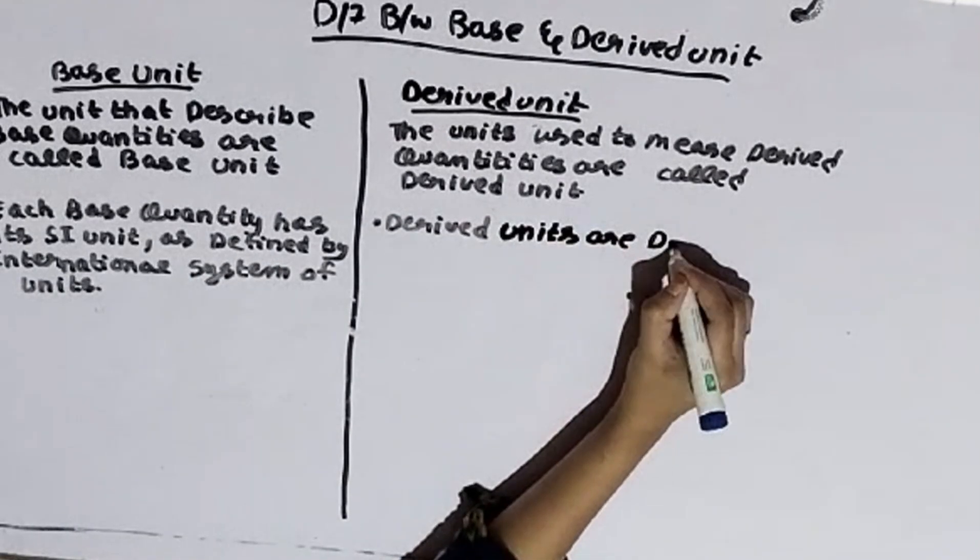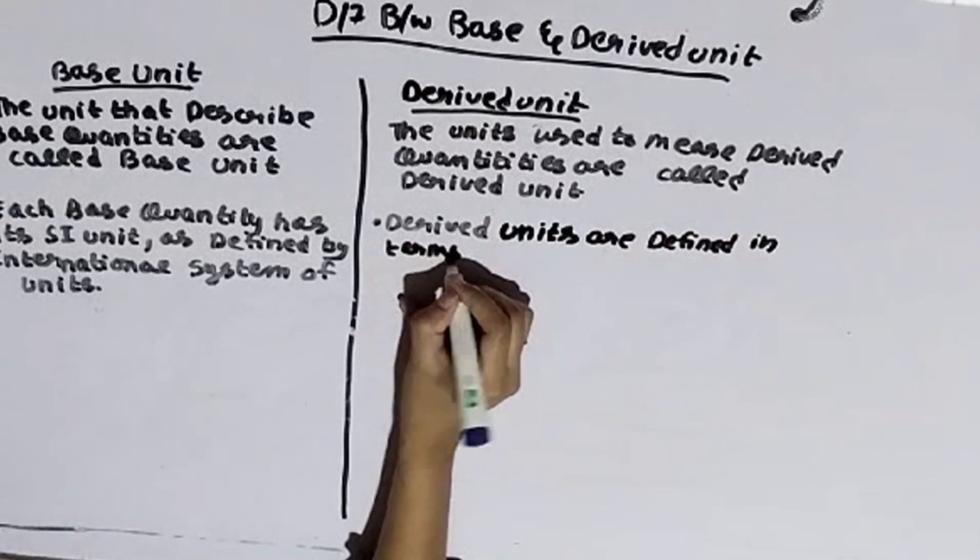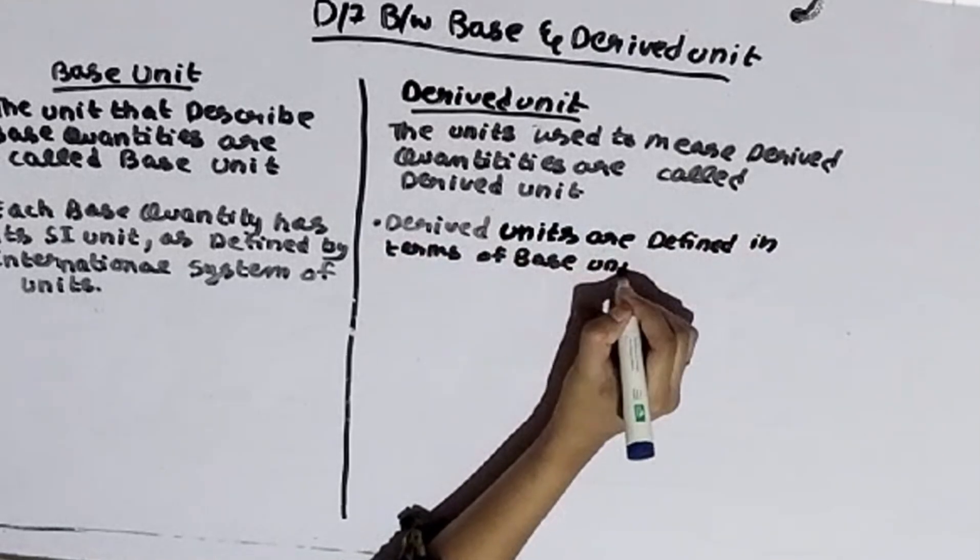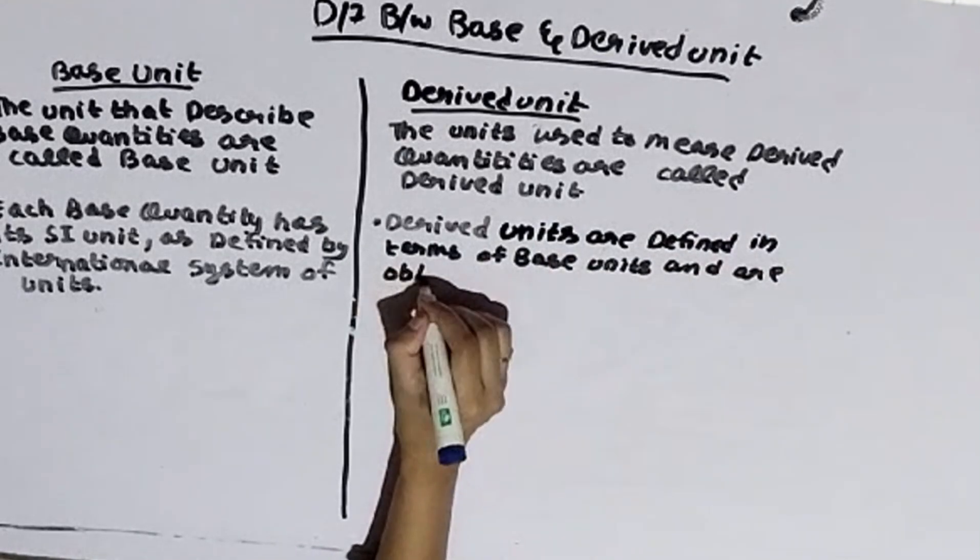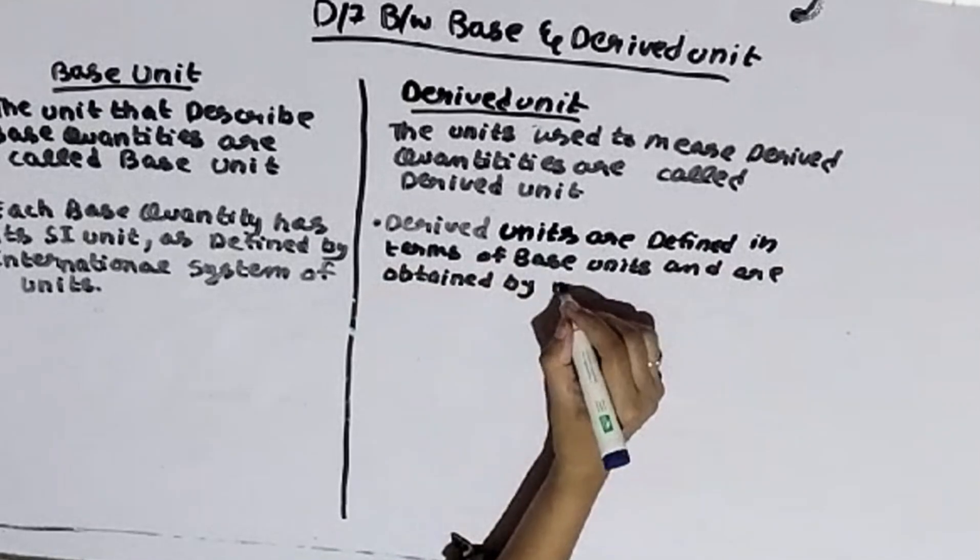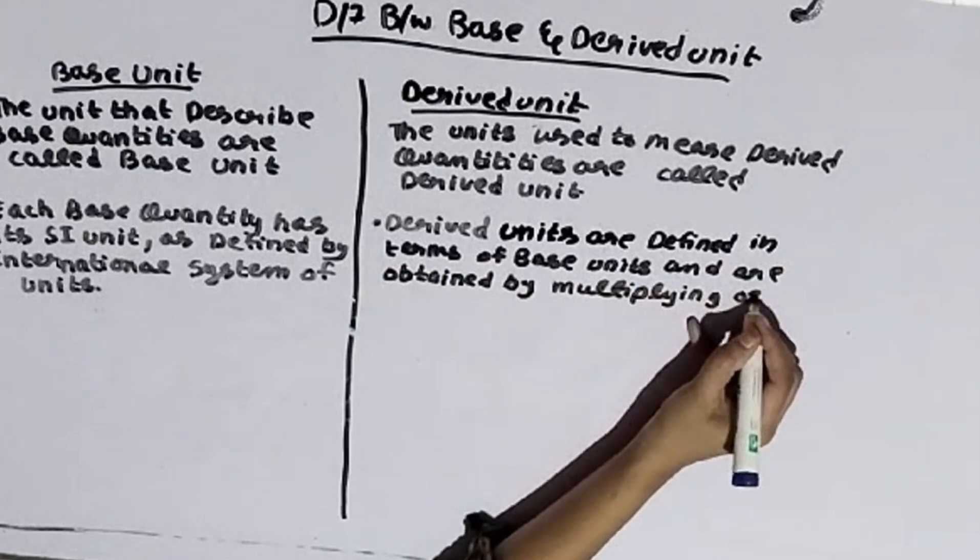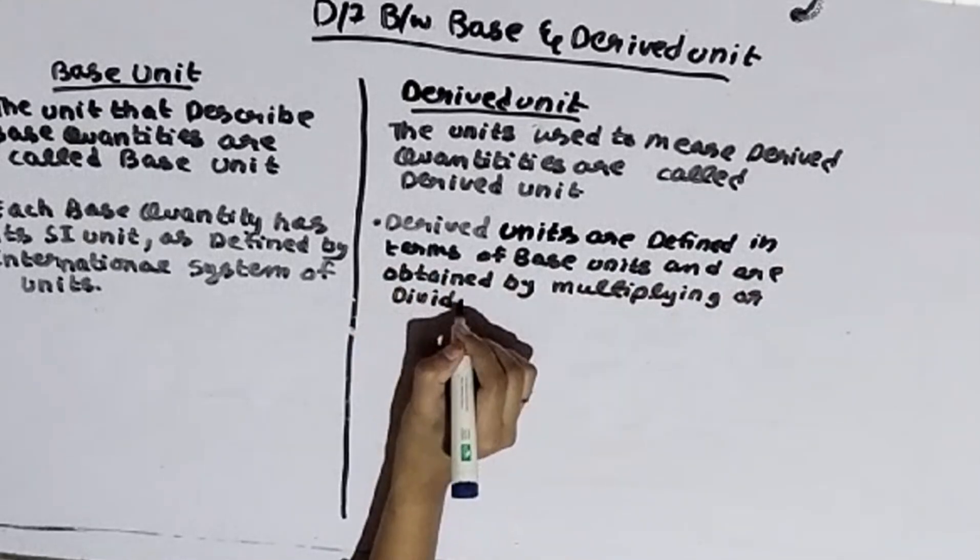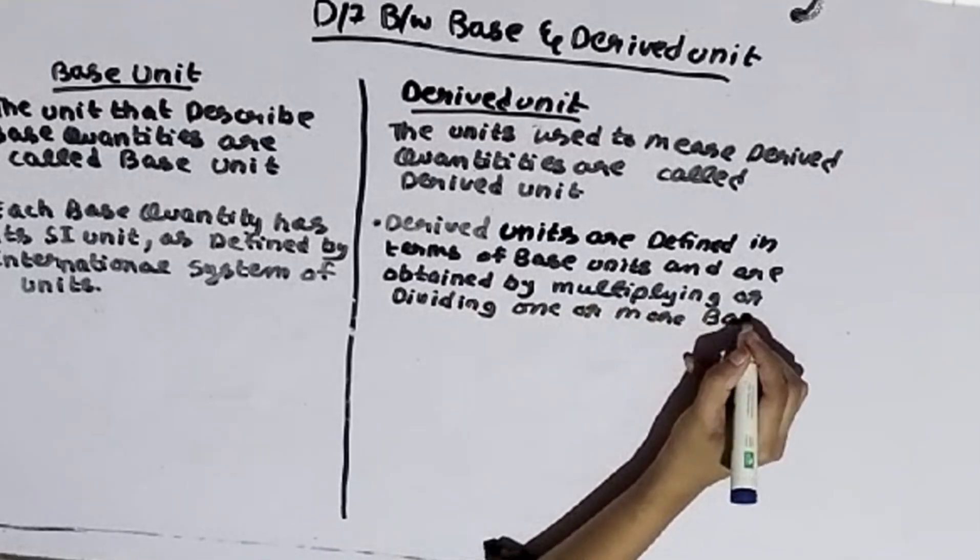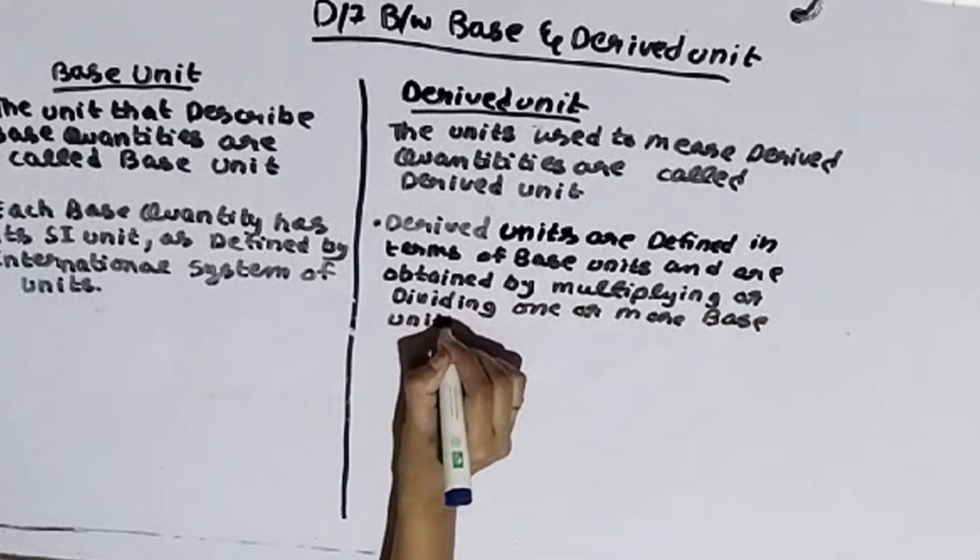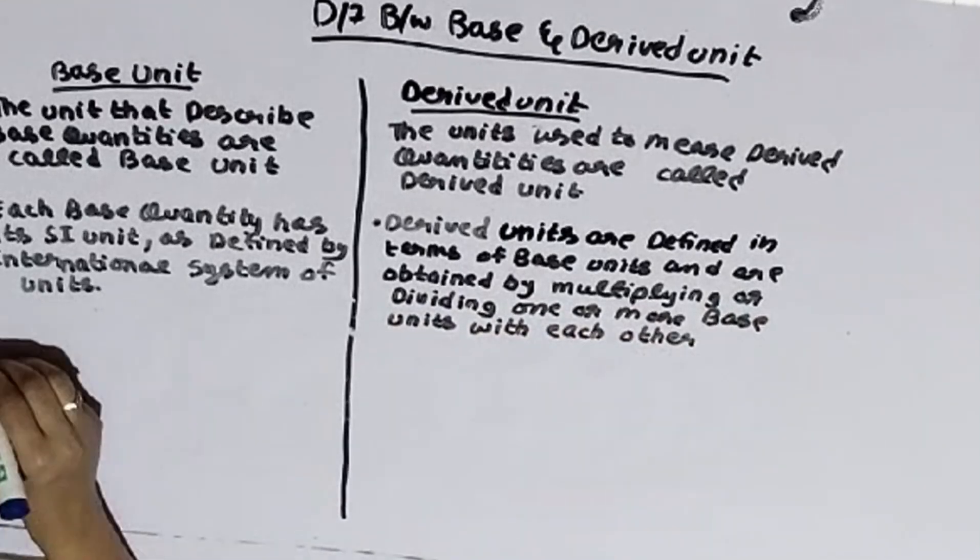Derived units are defined in terms of base units and are obtained by multiplying or dividing one or more base units with each other.